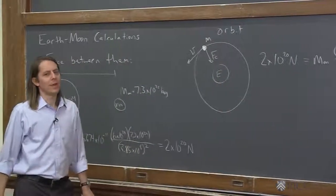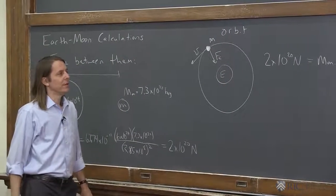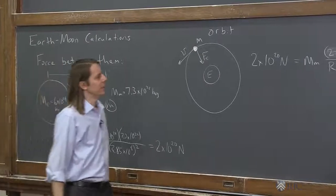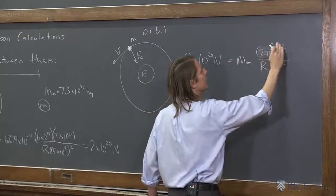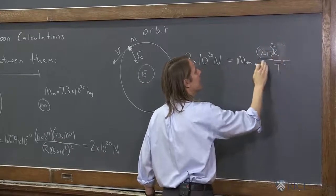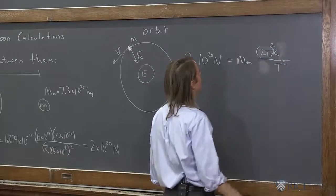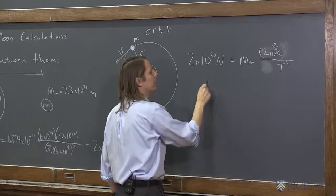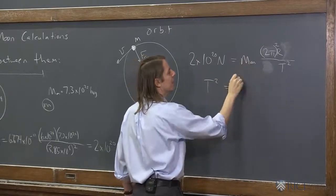So we change the formula like that. Then we can solve for the period and see if we get what you're supposed to get. You know, we could simplify it and just square the 2 pi, and that becomes r. We can bring the t squared over here.